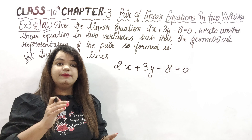Now let's verify: a1 upon a2 is 2 upon 2; b1 upon b2 is 3 upon 3; c1 upon c2 is minus 8 upon minus 6. See — 2 by 2 cuts to 1, 3 by 3 cuts to 1, but minus 8 by minus 6 cuts to 4 by 3. That means 1 is equal to 1, but 1 is not equal to 4 upon 3. So a1 upon a2 equals b1 upon b2, but it is not equal to c1 upon c2 — meaning these will be parallel lines.